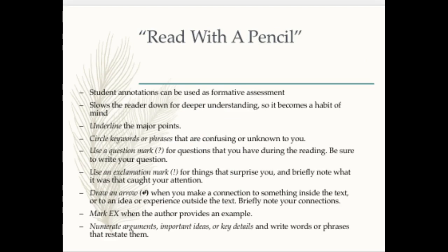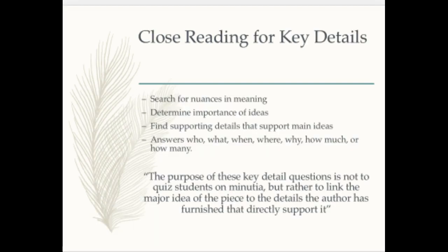The first way to help students with close reading is to help them learn how to annotate. They need to read with a pencil and mark up the text. I know that means more paper, but it also means teaching comprehension to a deeper level. You'll be searching for close detail on the first level — that's usually important ideas, facts, figures, those kinds of things. That's the first level.